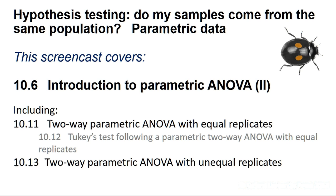This test asks how two categorical variables, termed factors, affect a single dependent variable, often called the response variable in statistical packages. The null hypothesis states that the factors have no effect and that all samples belong to the same statistical population. So why not do two one-way ANOVAs? Apart from the fact that more data improves the model, the two-way ANOVA allows us to ask if there's any interaction between the factors — that is, do the factors have a greater effect when combined than we might expect from simply summing their individual effects?